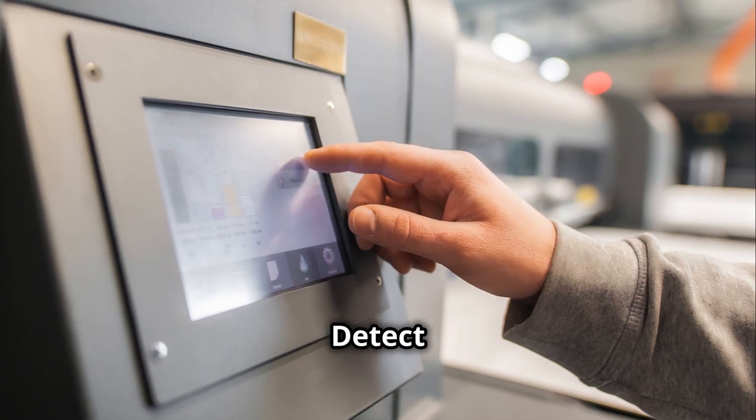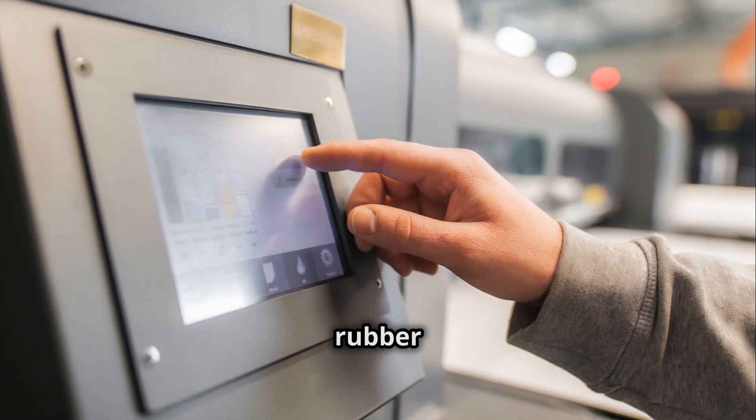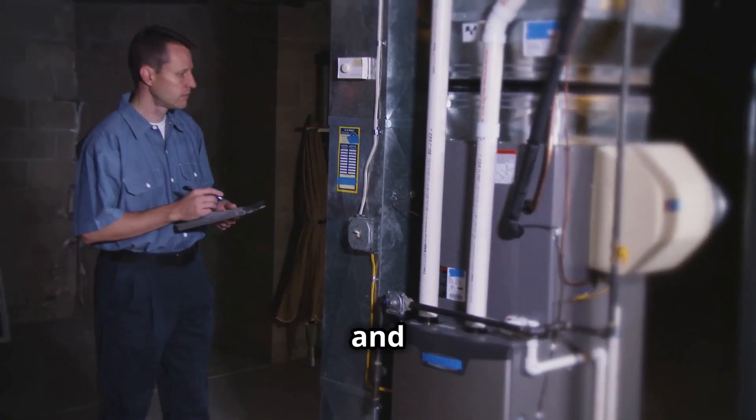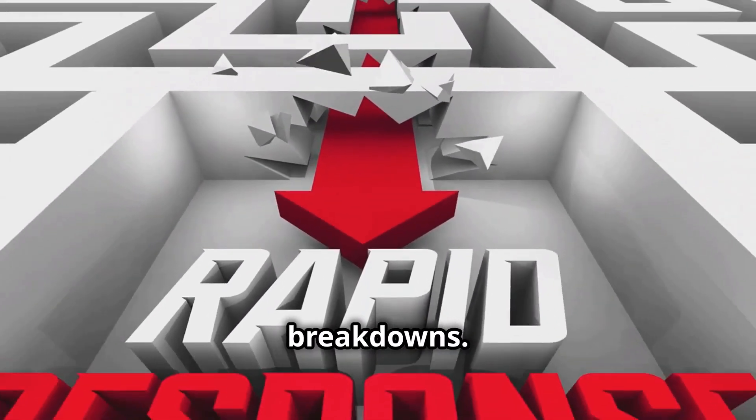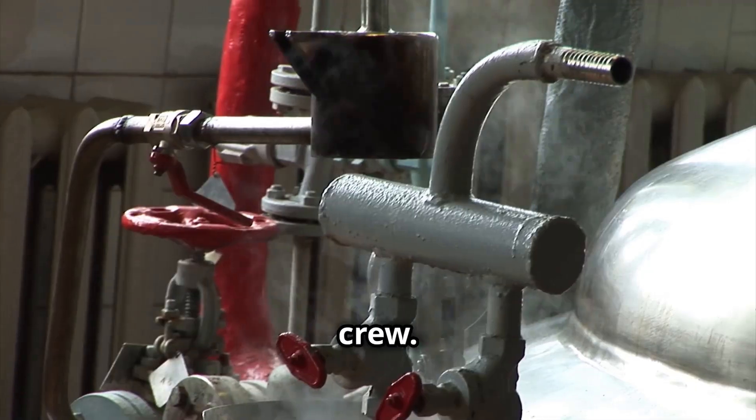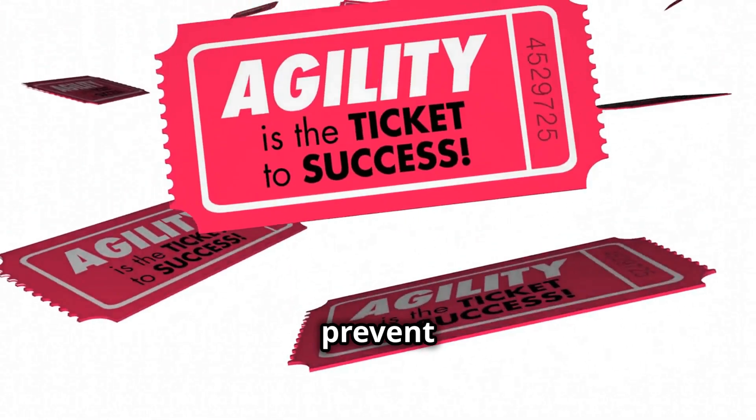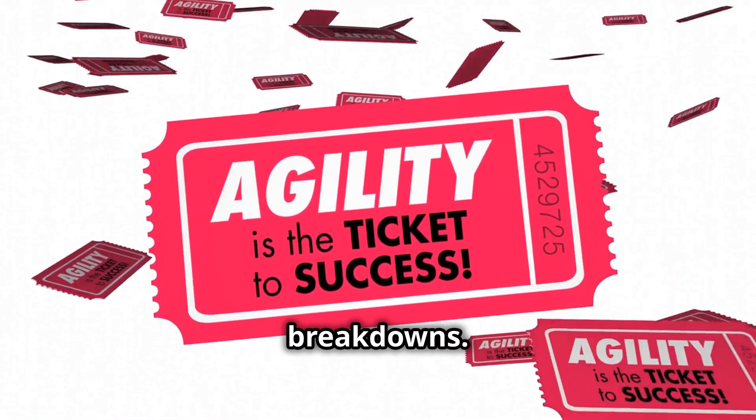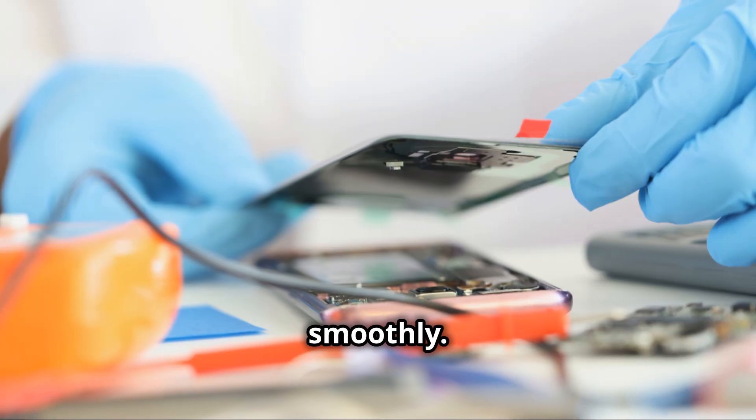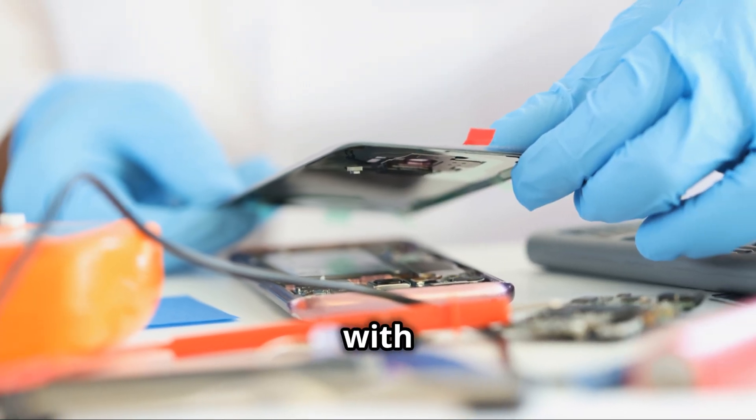Now, we're at detect to correct. This is where the rubber meets the road and action is taken. Address minor issues immediately and report major problems to your maintenance crew. Quick action can prevent small issues from becoming major breakdowns. Sometimes a temporary fix is necessary to keep things running smoothly. However, always follow up with a permanent solution.